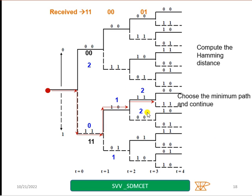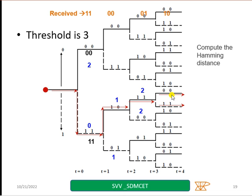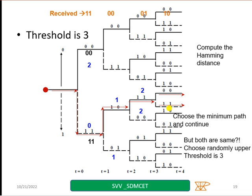Now, this is 2. This is 2. I will go to the upper portion. I will repeat the same procedure. Received is 10. Compare those two with this. Calculate. Both are 3, 3. Now, what I have to do? 3 is my threshold. Come back.